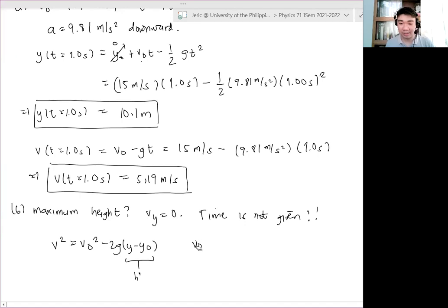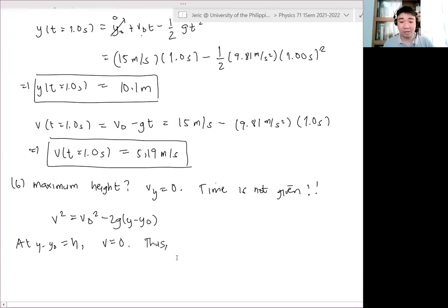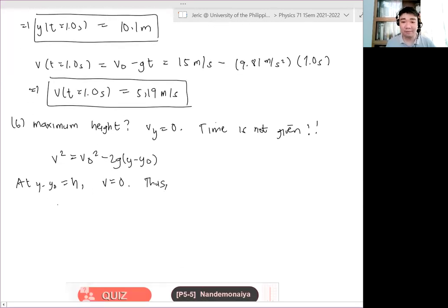This is what we want, this is the maximum height H, so let's say this is H. At Y minus Y naught equals H which is the maximum height, V equals zero, thus H is therefore equal, H equals what, so this becomes zero, we have V naught squared over 2G which is what, which is equal to about 11.47 meters. This is what we want, okay.